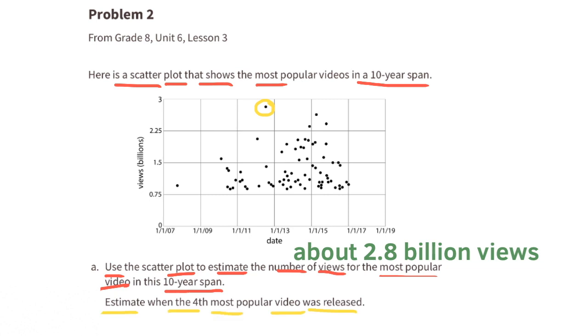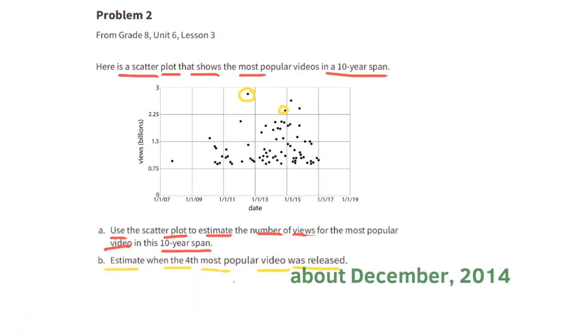B. Estimate when the fourth most popular video was released. The fourth most popular video will be the point that's fourth from the top. The release dates are shown on the horizontal axis along the bottom. So scroll straight down, and you'll see that the point falls just before January 1st, 2015. So I would say that the release date was somewhere in late December 2014.